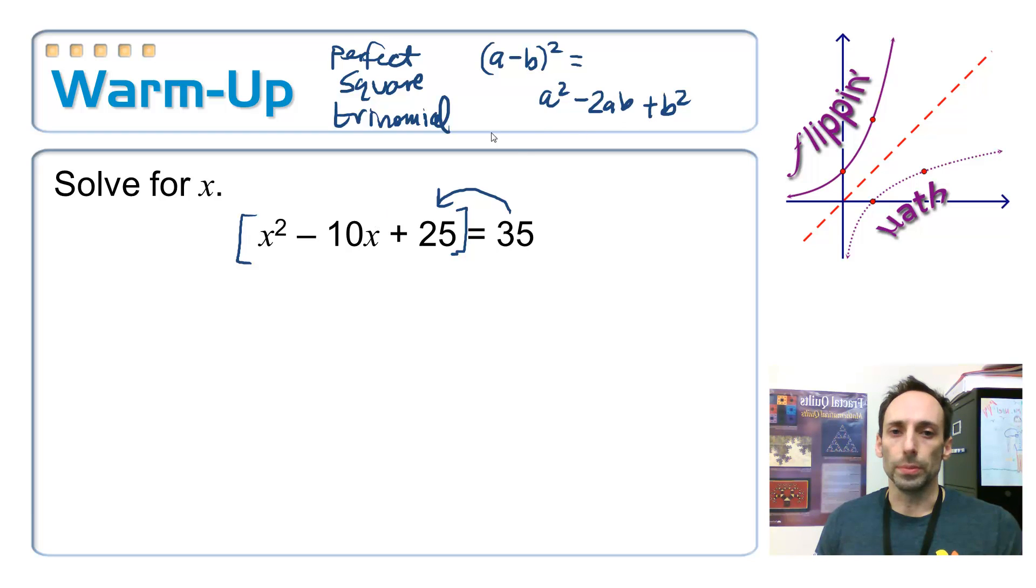So that fits this bill. The a here is, well, the first and the last term have to be perfect squares. x squared is a perfect square. 25 is a perfect square. That's what I'm getting from these two. And the middle term is made up of 2 times the square root of the first times the square root of the last one. The square root of the 25 is 5. The square root of the x squared is x. So, 2 times 5 times x is negative 10x. There.